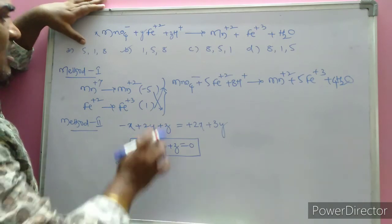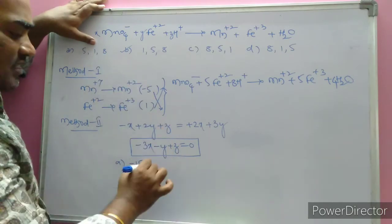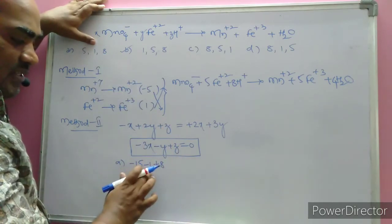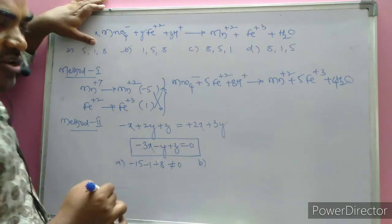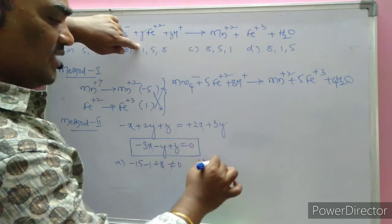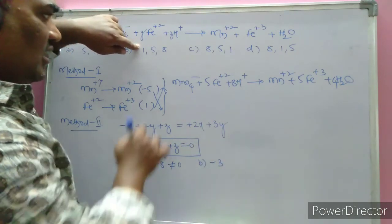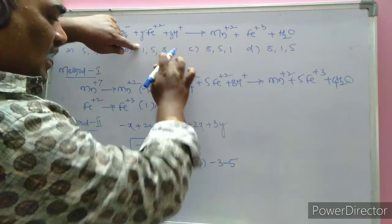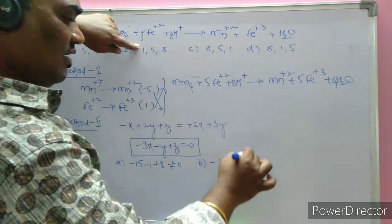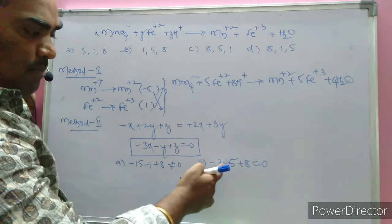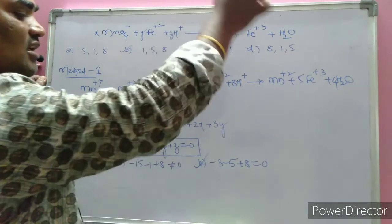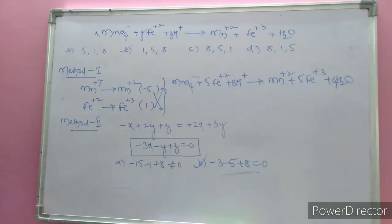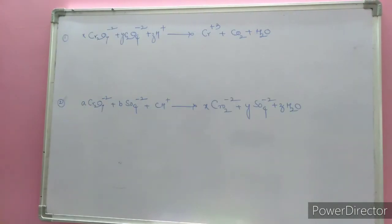Checking option A (1, 5, 3): minus 3 times 1 equals minus 3; minus y equals minus 5; plus z equals 8. So minus 3 minus 5 plus 8 equals minus 8 plus 8... wait: minus 15 plus 8 equals not zero — incorrect. Checking option B (1, 5, 8): minus 3 times 1 equals minus 3; minus 5; plus 8 equals zero. Yes! Hence the right answer is B.